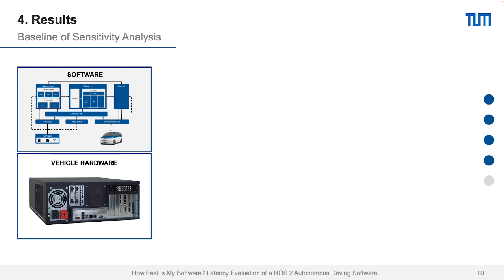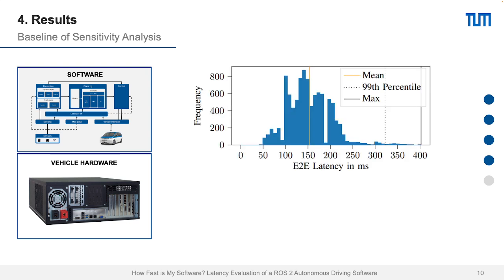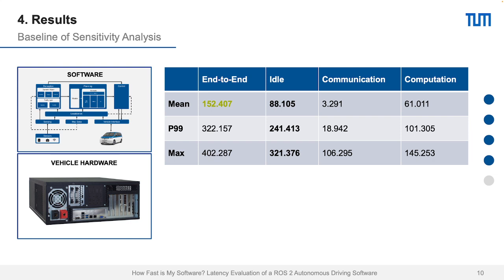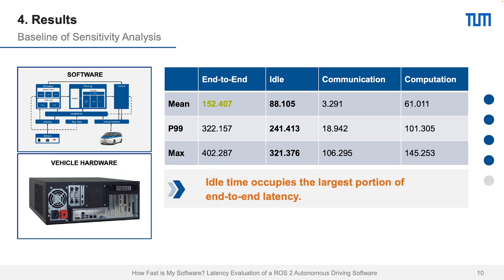Ultimately, when analyzing the software, we see different times. We see an end-to-end time with a mean value of 152 milliseconds — meaning on average, 152 milliseconds are needed to process from sensing to control output, which is a good value but shows room for improvement. We can see opportunities for improvement especially in the idle times, which are very high. The idle time occupies the largest portion of our end-to-end latency and therefore shows the greatest potential for optimization.